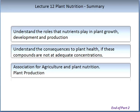In Part 1 of this topic, Plant Nutrition, Lecture 12, you were asked to read the recommended textbook Taiz and Zeiger, Plant Physiology, 5th edition, Chapter 5 on Plant Mineral Nutrition. Many of the aspects covered in that reading are relevant to this lecture. Please understand the roles that plant nutrition plays in growth, development and production. Understand the consequences to plant health if these compounds are not in adequate concentrations. After completing this lecture and the reading, you should have an understanding of the association between agriculture and plant nutrition, which is a very important input into plant production.